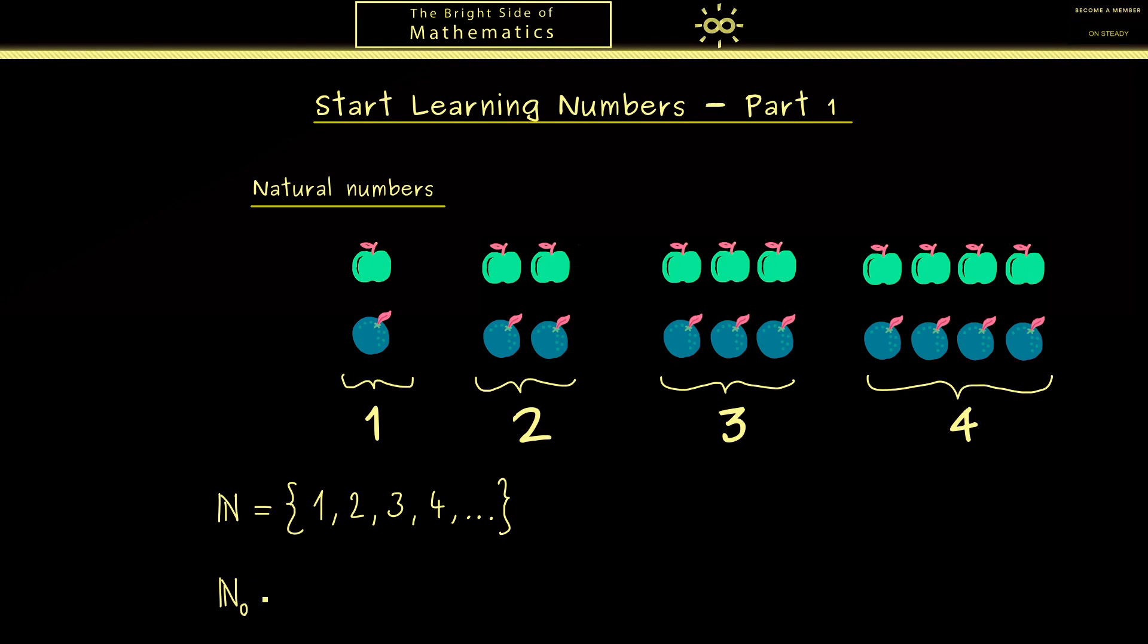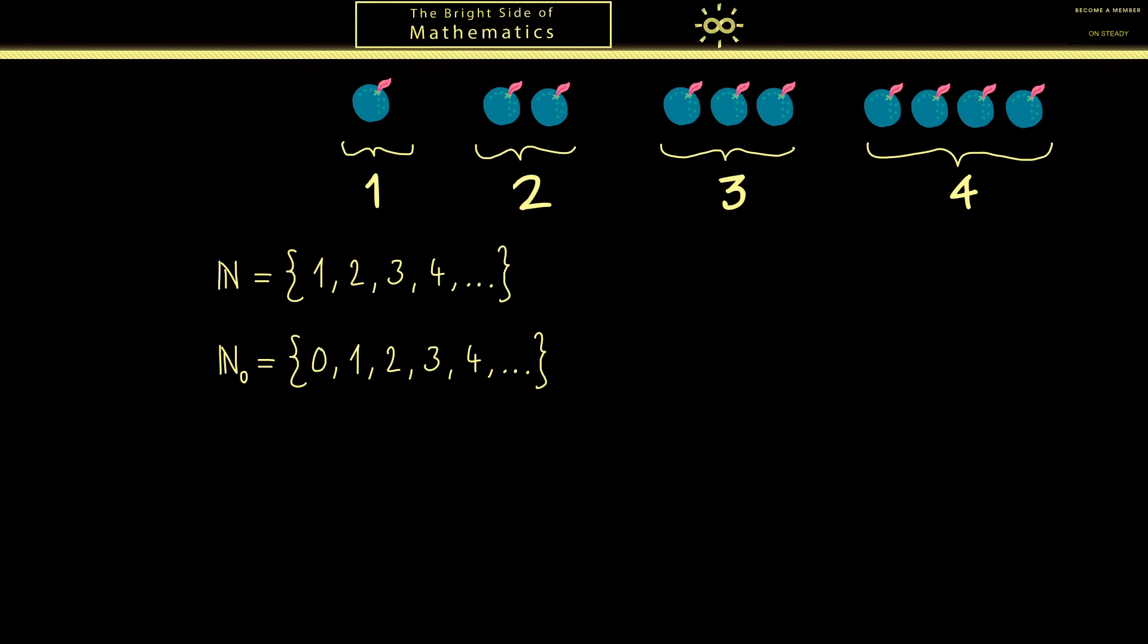More precisely we will construct the natural numbers that also include 0 as a number. I will use the symbol N_0 for this set but be careful often also N is used for this set here. Ok with this let's start constructing the natural numbers.